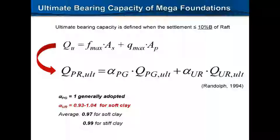Now, starting — how can you handle this kind of large-size foundation first? There are some records on the ultimate bearing capacity. Yesterday we were talking about ultimate bearing capacity several times. It's defined when, in the case of a large diameter or large size of a pile raft, the settlement is almost less than 10% of the width of the whole mega foundation. We can define the ultimate capacity when the settlement is less than 10% of the whole footing width. In the Jamsil case, it's 70 meters by 70 meters, so 10% multiplied by 70 meters of raft — the settlement at that point corresponds to the ultimate bearing capacity.